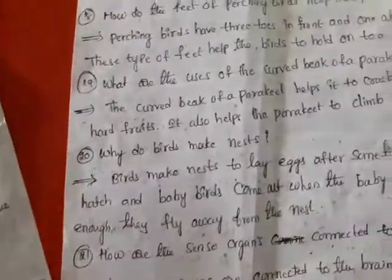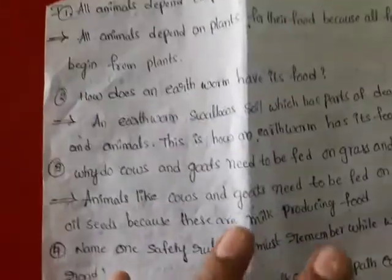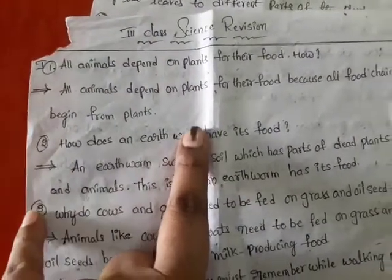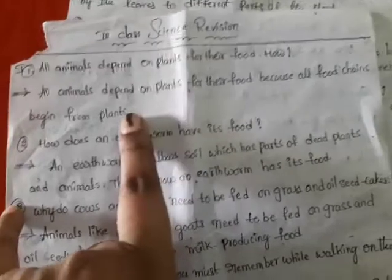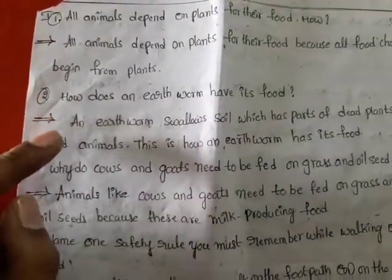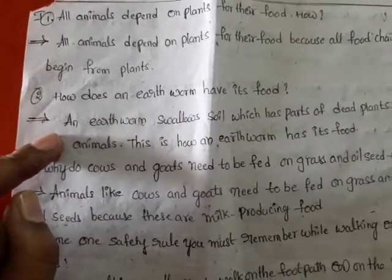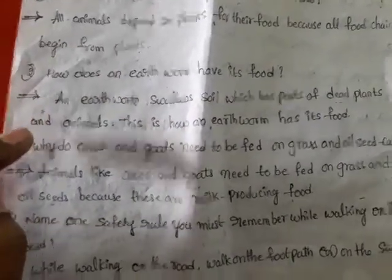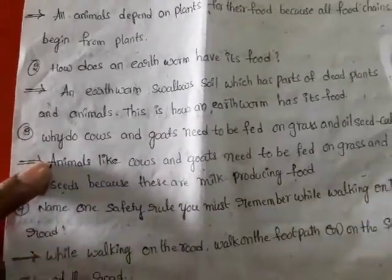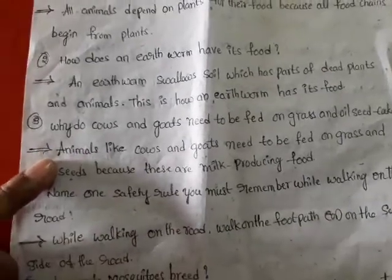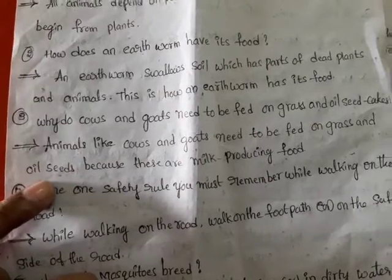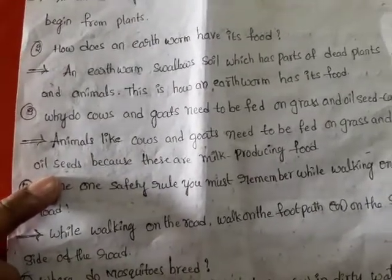Already we learned 15 questions and answers. Question 1: All animals depend on plants for their food because all food chains begin from plants. Question 2: An earthworm swallows soil which has parts of dead plants and dead animals — this is how an earthworm has its food. Question 3: Animals like cows and goats need to be fed on grass and oil seeds because they are milk-producing animals.